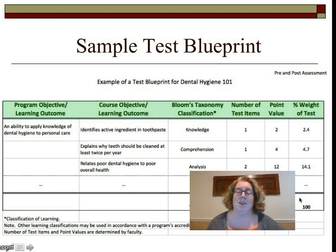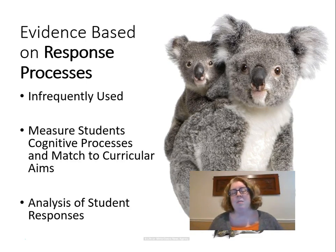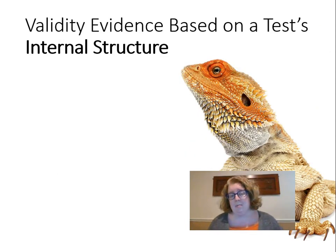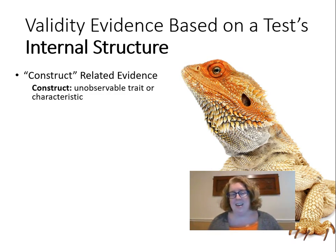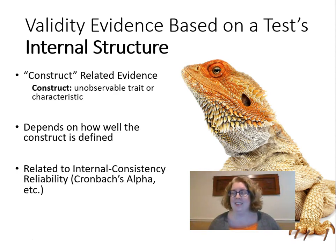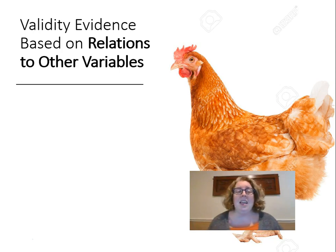We can also have evidence based upon response processes — this is about how students are answering test items and what cognitive processes they use. We also have evidence based upon internal structure. Remember, a construct is that unobservable trait or characteristic — that latent variable we're measuring. How well that construct is defined relates to the internal consistency reliability we discussed earlier. This is more commonly used for affective measures than for educational tests.